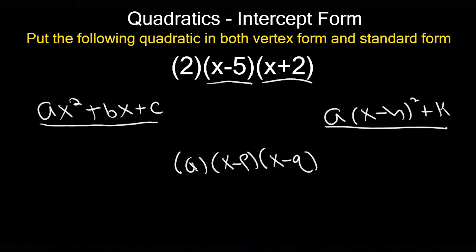This a is interchangeable no matter what form you're going to; it will stay the same and represents a vertical stretch or compression, meaning your graph is either going to get skinnier or wider depending on the value of a. It will be the same across all three forms.